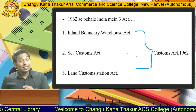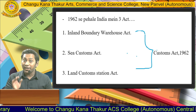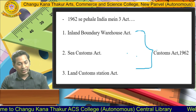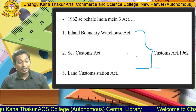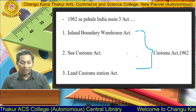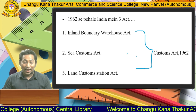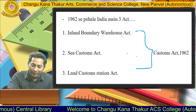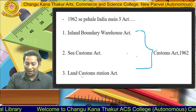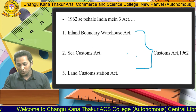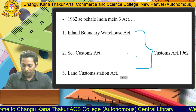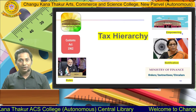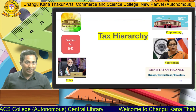Before 1962, there were three important acts in India in respect of customs: the first was the Inland Boundaries Warehouse Act, the second was the Sea Custom Act, and the third was the Land Custom Station Act. All three of these acts were subsumed and merged in 1962 into one single act — the Custom Act 1962.